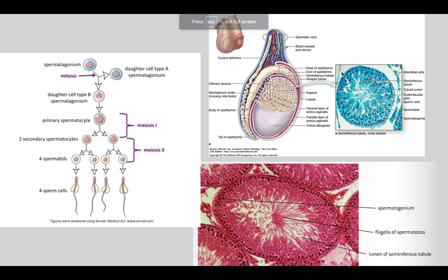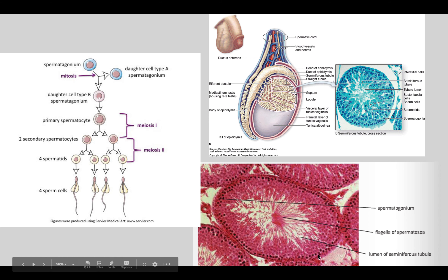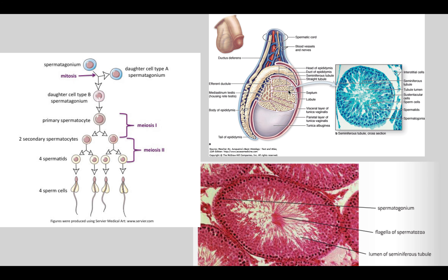Looking at the male reproductive system — the penis and testis. If we cut the testis and look from the top, it has tubes like small intestine — we call them seminiferous tubules. Cutting from the top, we see them as individual circles. Each circle is a cross-section of a tubule — one tubule, another tubule, another right here.